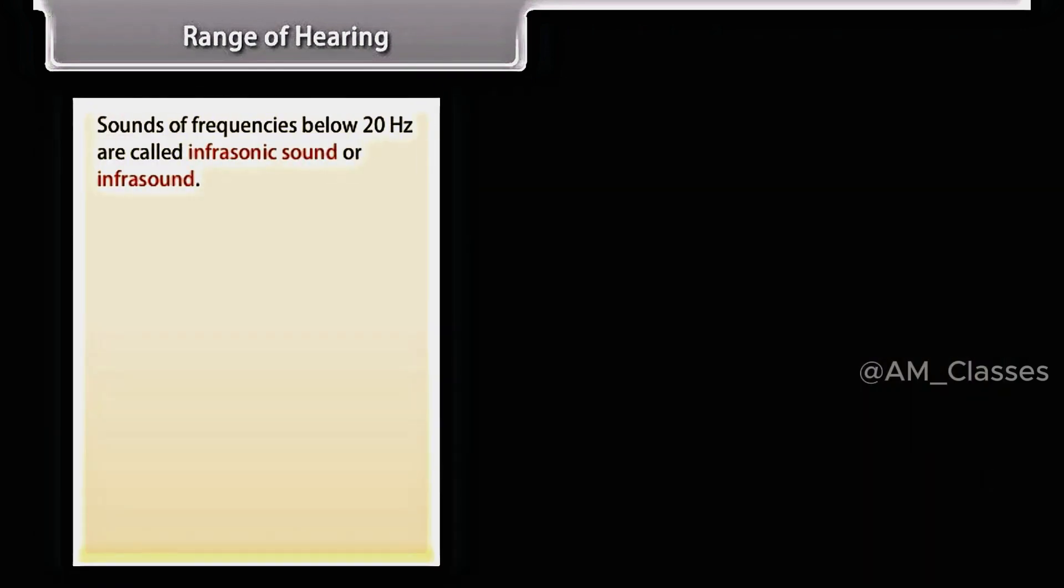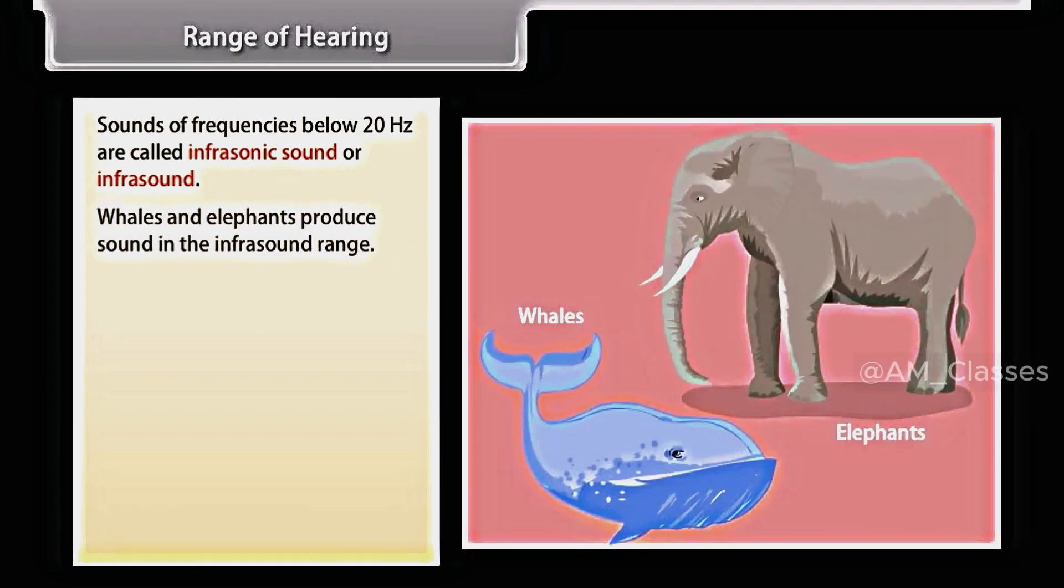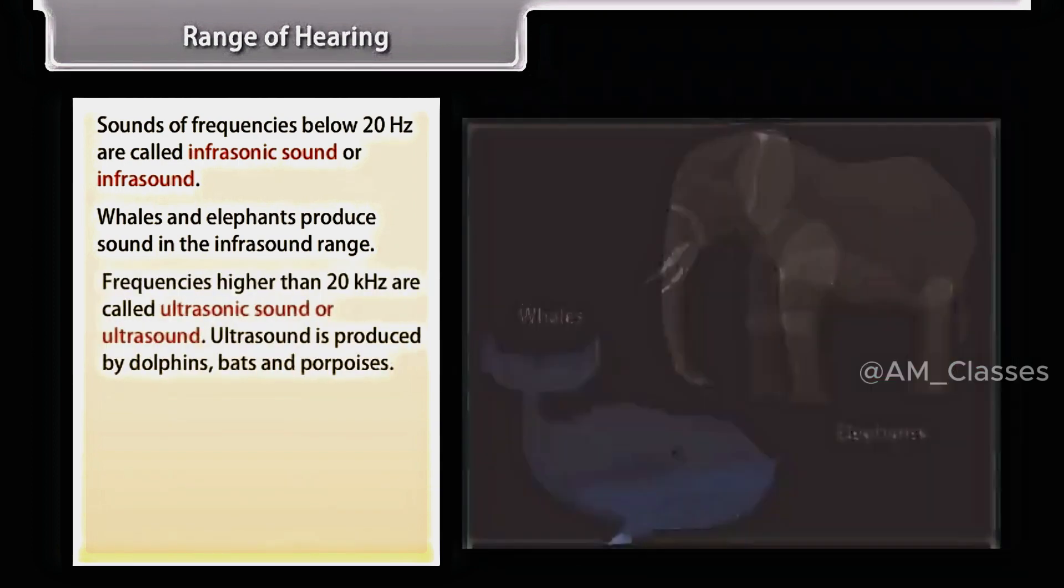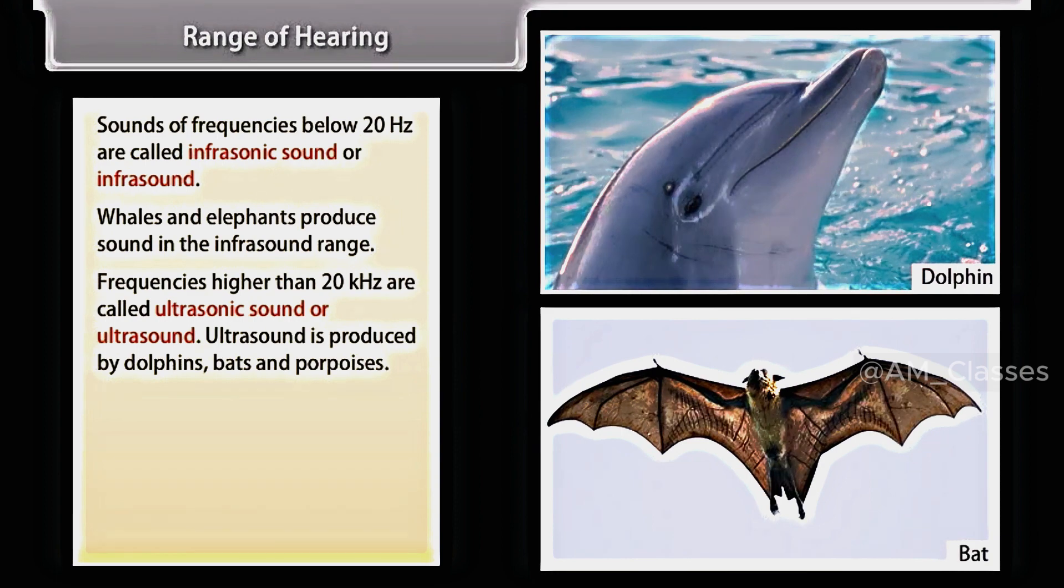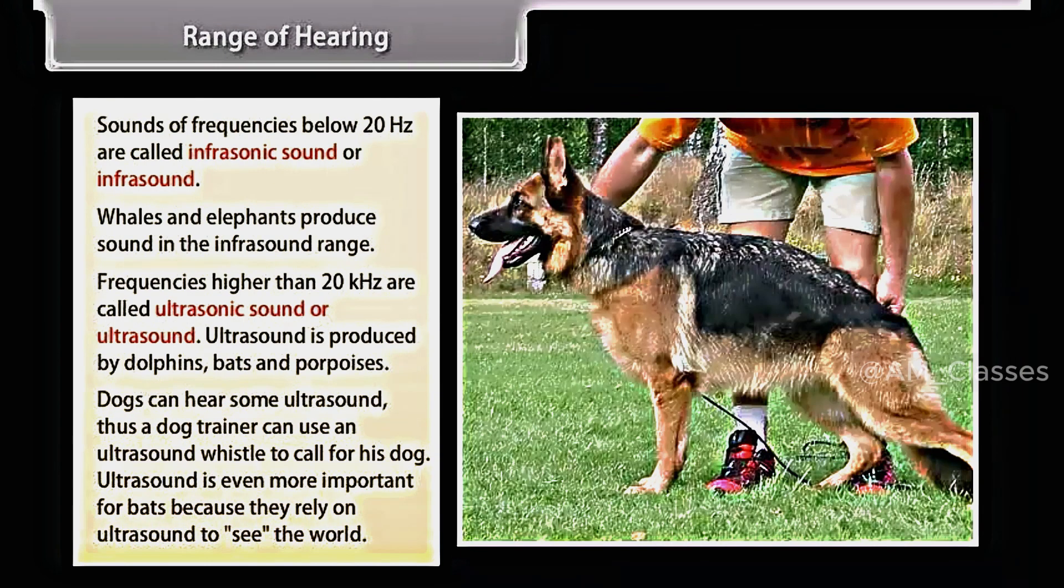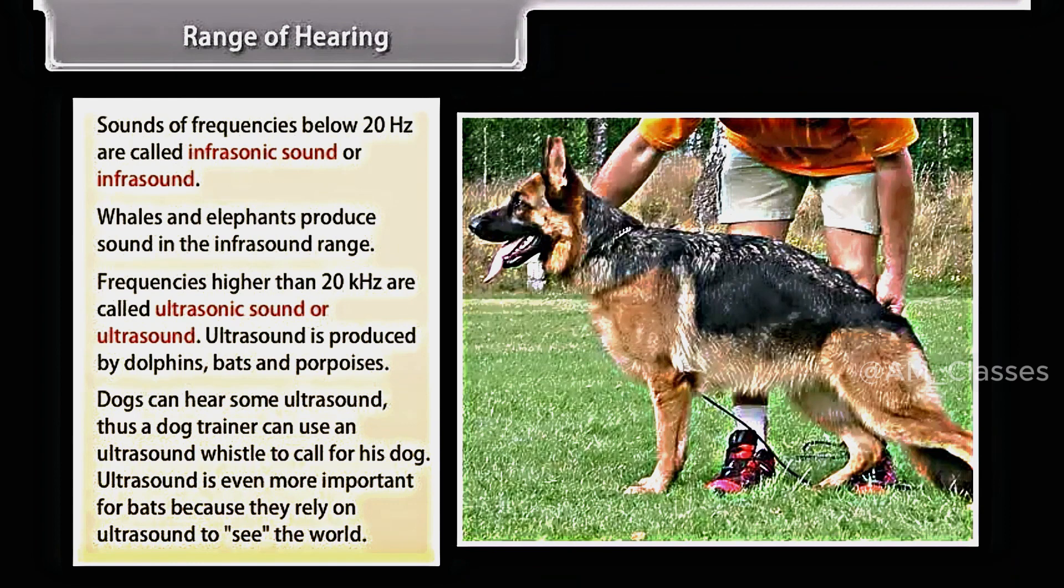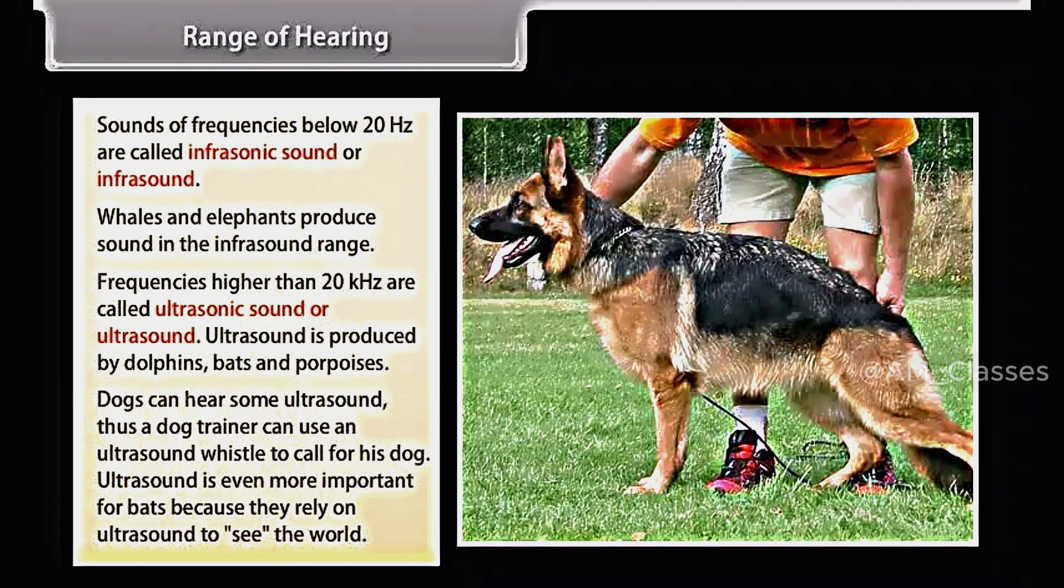Sounds of frequencies below 20 hertz are called infrasonic sound or infrasound. Some animals like whales and elephants produce sounds in the infrasound range. Frequencies higher than 20 kilohertz are called ultrasonic sound or ultrasound. Dogs can hear some ultrasound. Thus, a dog trainer can use an ultrasound whistle to call his dog. Ultrasound is even more important for bats because they rely on ultrasound to see the world.